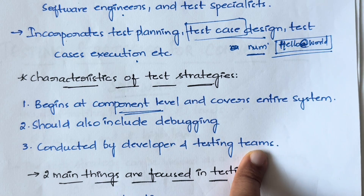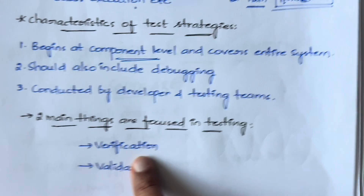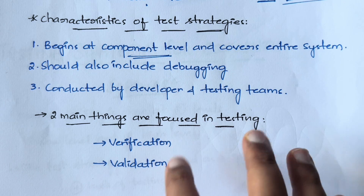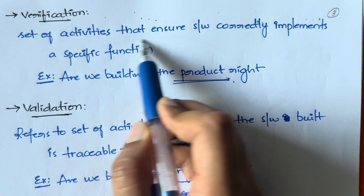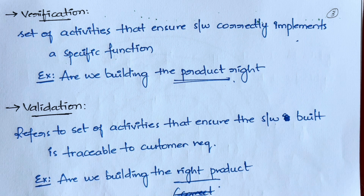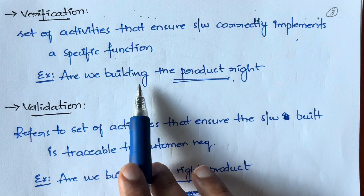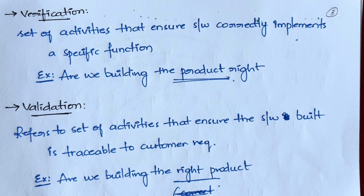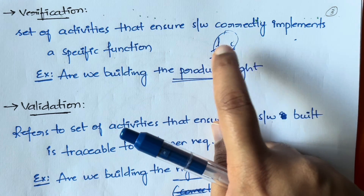There are two main things focused on in testing: verification and validation. Verification is a set of activities that ensure the software correctly implements a specific function — meaning, are we building the product right? Are we developing it in the correct way? Whether the functionality we are developing is correct or not is not the concern here; it's about whether we are developing it the right way.